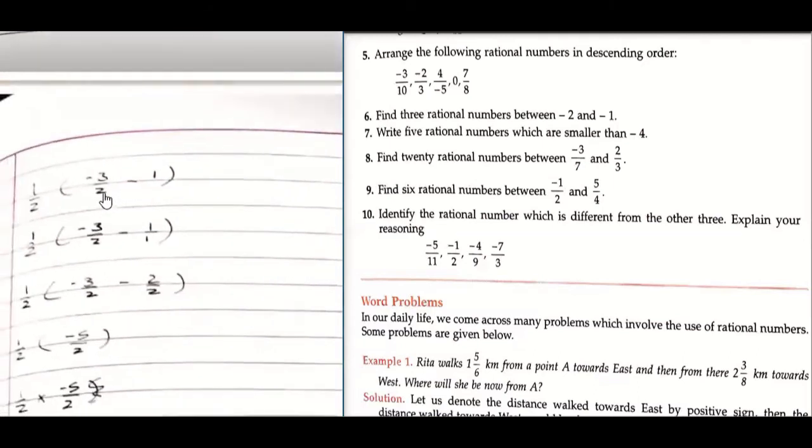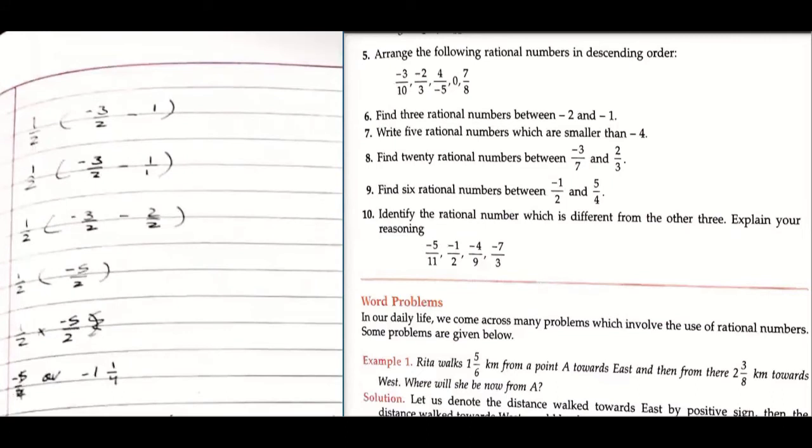Okay, is this thing visible? Yes, okay. So minus three upon two, minus one, minus two upon two, minus five upon two, that is minus five upon four. Okay, these are the three numbers. So let me do the same thing with the little bit faster way.